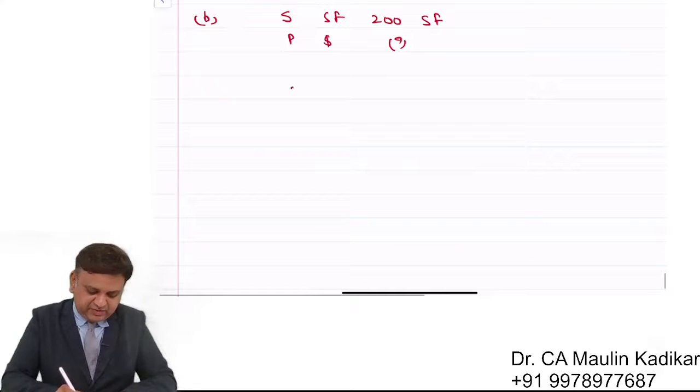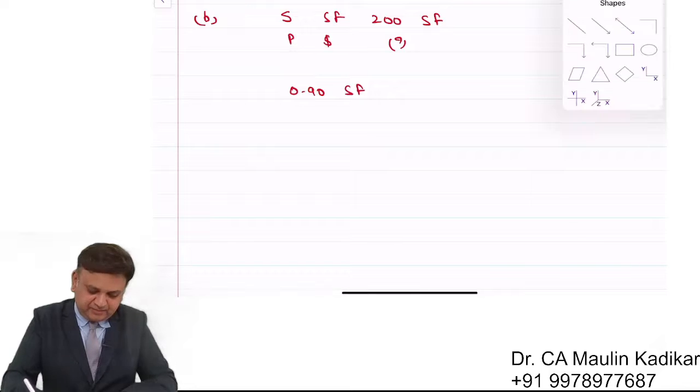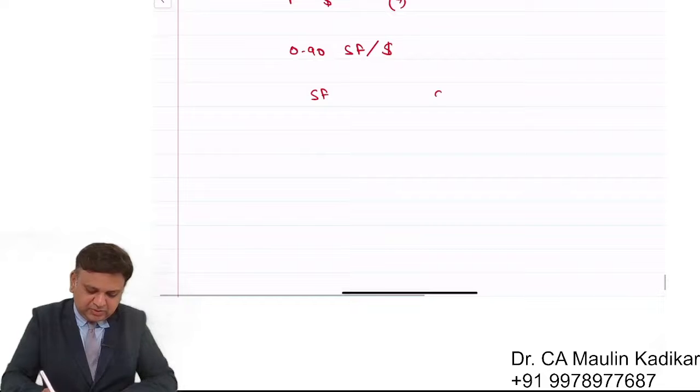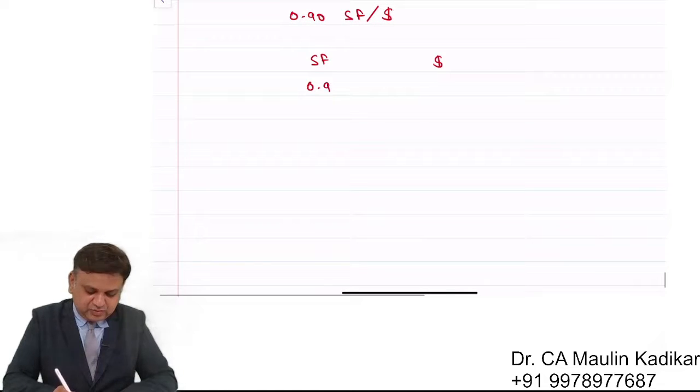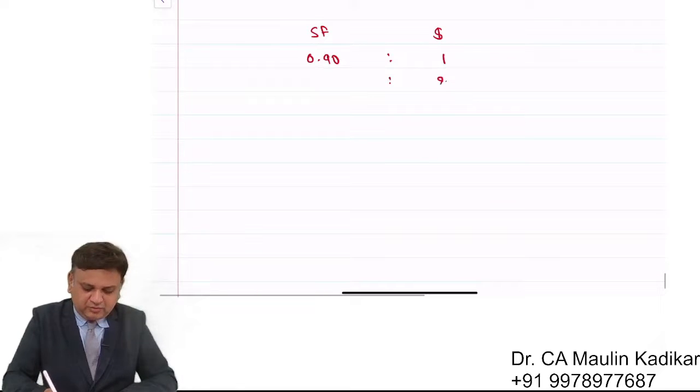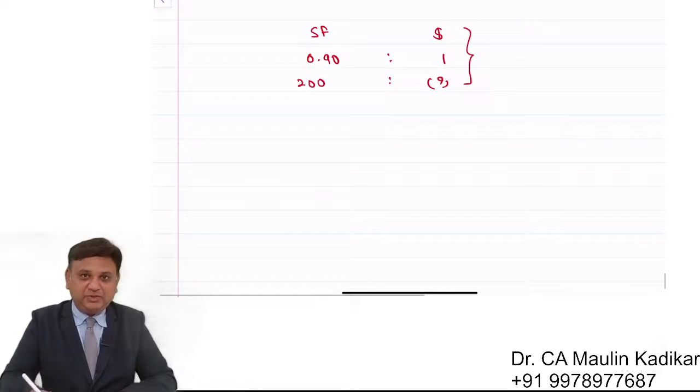So the exchange rate is 0.90 Swiss Franc for US dollar. Swiss Franc and dollar: 0.90 Swiss Franc per dollar. So amount of dollar that 200 Swiss Francs can buy, that is the question.